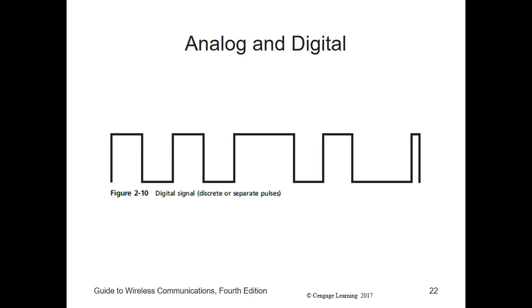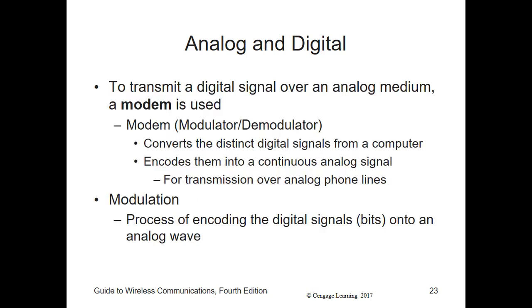Computers operate using digital signals. If analog data such as a video image or audio sound needs to be stored on a computer, it must be converted into digital format. To transmit a digital signal over a telephone line or TV cable — which are analog media not designed to carry purely digital signals — we need a modulator/demodulator, or modem. A modem takes the distinct pulses of electricity that make up digital signals and encodes them into a continuous analog wave. The process of encoding digital signals onto an analog wave is called modulation.